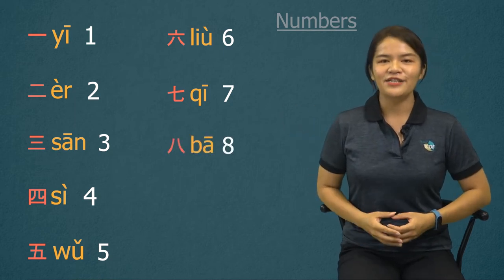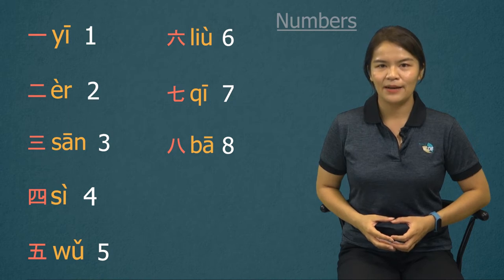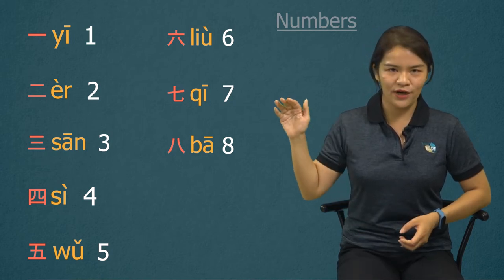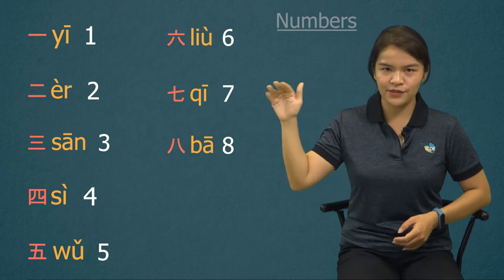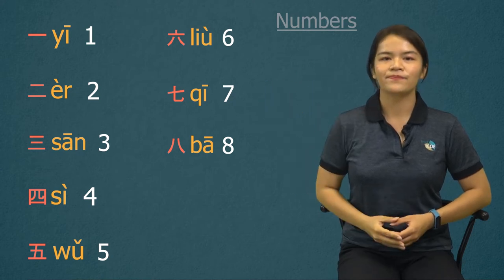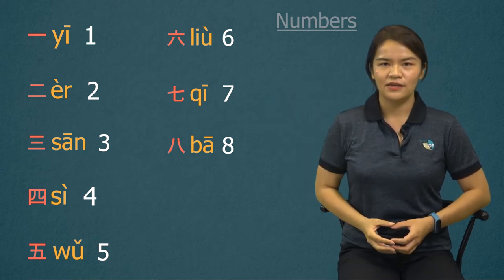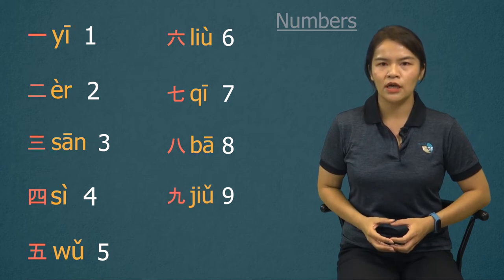Number eight. 八, 八. It's the easiest one — 八, high flat tone. Number nine. 九, 九, 九. It's low tone.